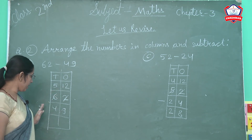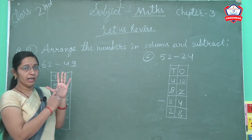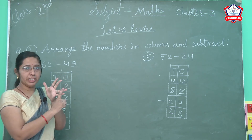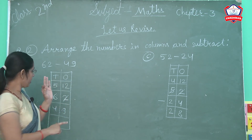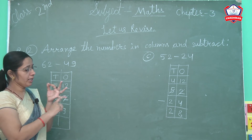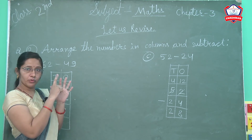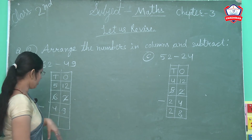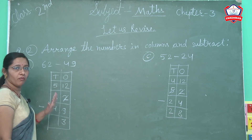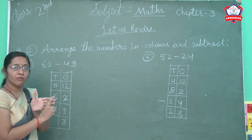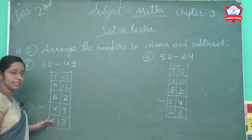Now start 12 minus 9. 12 lines mein se 9 lines cut karni hai. Pahle count karo 12 — 1 through 12. We reach here at 12. Cut it 9 lines — 1, 2, 3, 4, 5, 6, 7, 8, 9 — 9 is cut. Now count left lines — 1, 2, 3. How many left? 3 left. So write 3. Next: 5 minus 4. 5 minus 4, the left is 1. So write 1. The answer of 62 minus 49, the answer is 13.